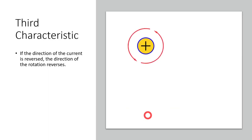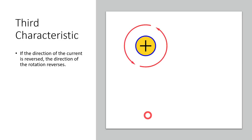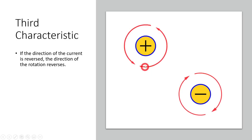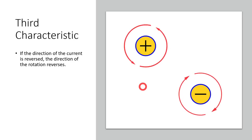The third characteristic: if you change the direction of current in the wire, you're going to change the direction of the magnetic field's rotation. This is what makes a motor reversible. The upper left corner is showing current coming out of the positive of the battery, rotating in that direction - counterclockwise. If we reverse polarity on the power source and change the current through the conductor, we're going to also change that rotation to clockwise.